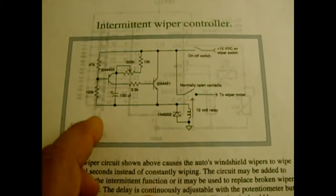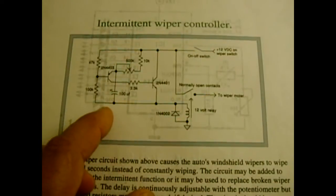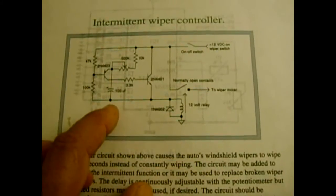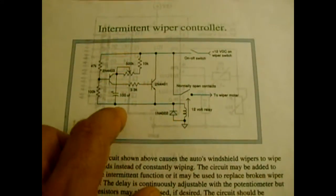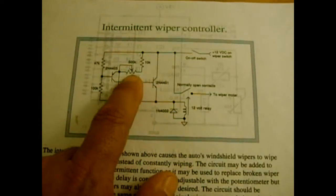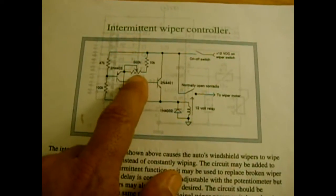The schematic is very simple. It only consists of a few resistors, a couple of transistors, a capacitor, a relay, a diode, and a potentiometer. It's fully adjustable on the delay with this potentiometer right here, which is a 500k pot.